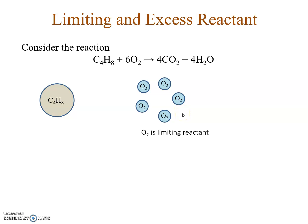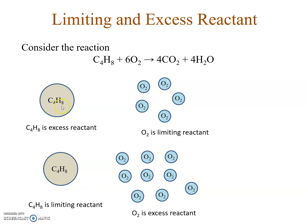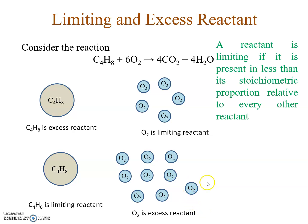Consider one mole of C₄H₈: the stoichiometric requirement is 6 moles of O₂. If I use 9 moles of O₂, then after the reaction completes, when all the C₄H₈ is consumed, 3 moles of O₂ remain. Here C₄H₈ is the limiting reactant — it gets consumed first. O₂ is the excess reactant. So in the first case (5 moles O₂), O₂ was the limiting reactant; in the second case (9 moles O₂), C₄H₈ is the limiting reactant and O₂ is in excess.